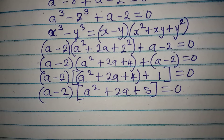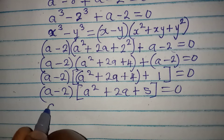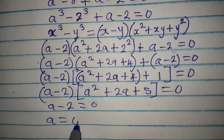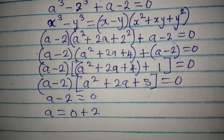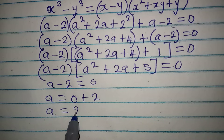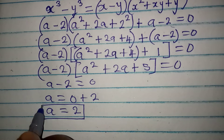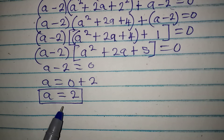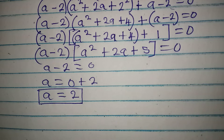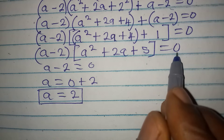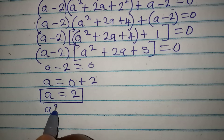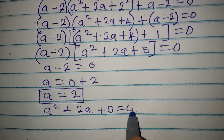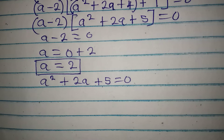Now we apply the zero product rule. Taking the first expression, a - 2 = 0, which means a = 2. We call this a₁. If we only need the real solution we can stop here, but since we need the complete solution, we take a² + 2a + 5 = 0 and use the quadratic formula.